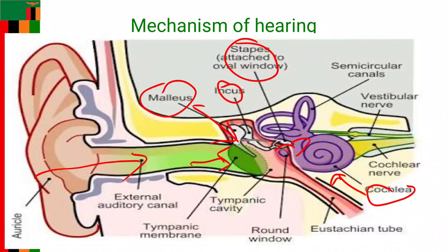Once these vibrations hit the cochlea, because the cochlea is filled with fluid, this particular fluid inside the cochlea allows the vibration to travel in the form of waves along the basilar membrane that is found inside the cochlea. Inside the cochlea itself there are what are known as hair cells — sensory cells that sit on top of the basilar membrane.